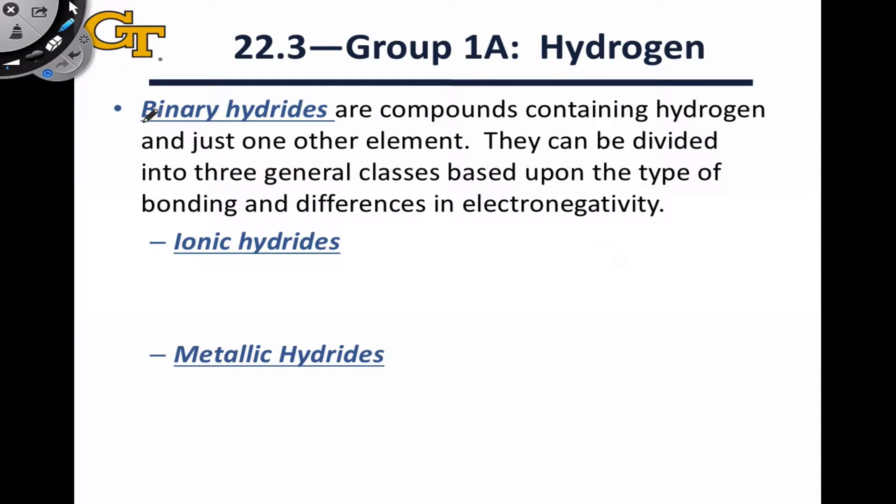The so-called binary hydrides contain hydrogen with just one other element, and we can divide them into three general classes based on differences in electronegativity between the atoms involved and the resulting type of bonding that we observe. The first class are called the ionic hydrides, and you may hear these referred to as the saline hydrides as well.